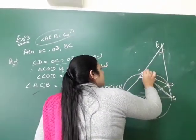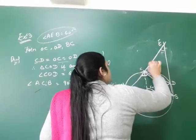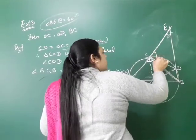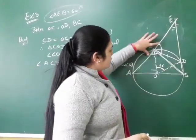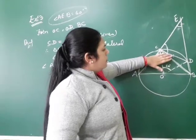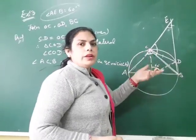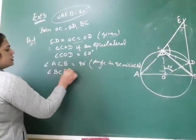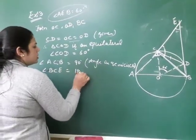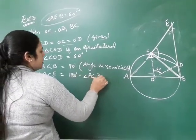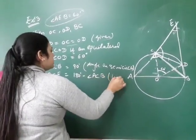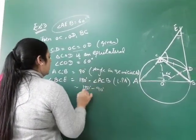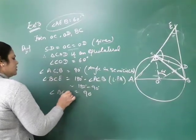Now, angle BCE equals 180 minus angle ACB by the linear pair property — both are on a straight line. So angle BCE equals 180 minus 90, which is 90 degrees. So BCE is 90 degrees.